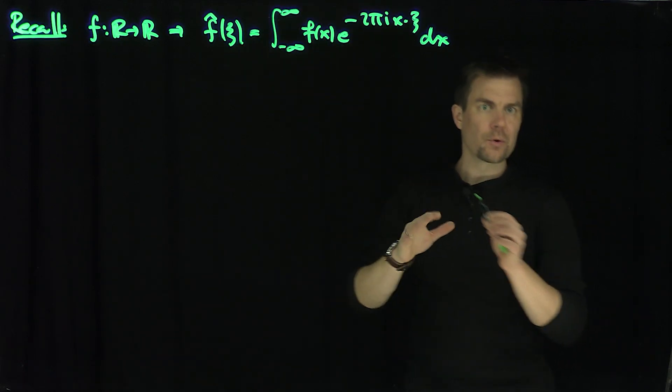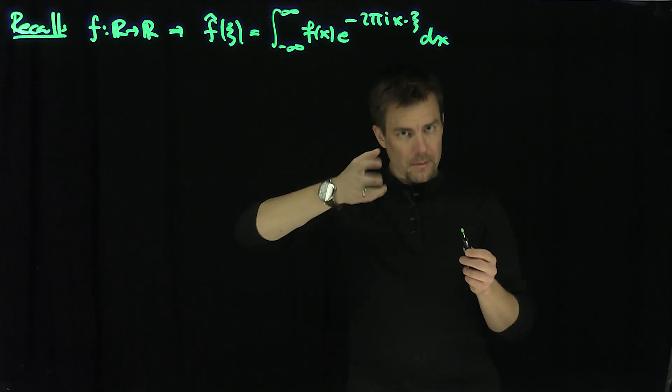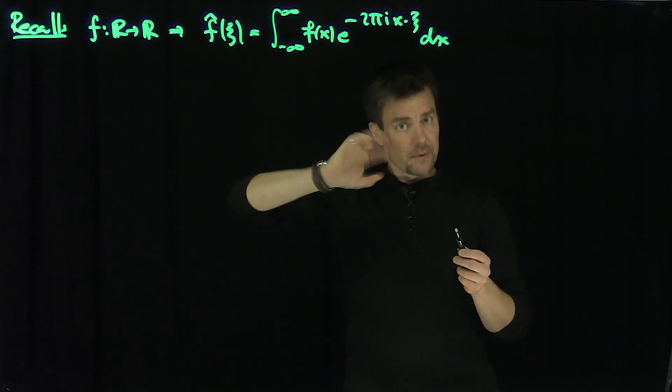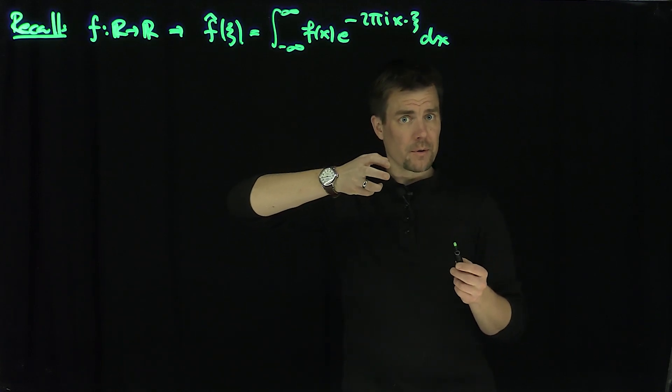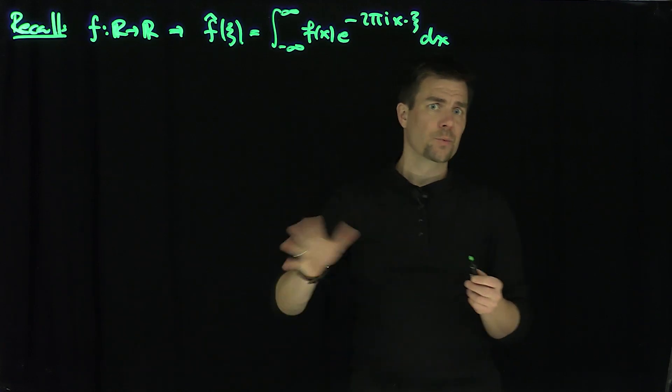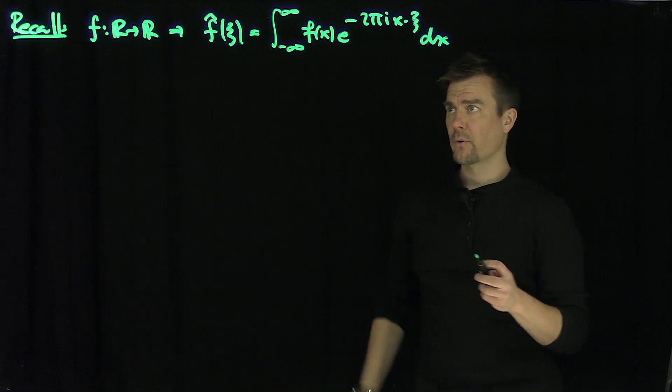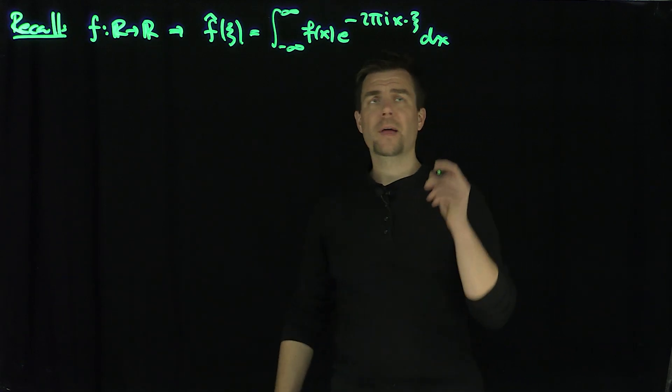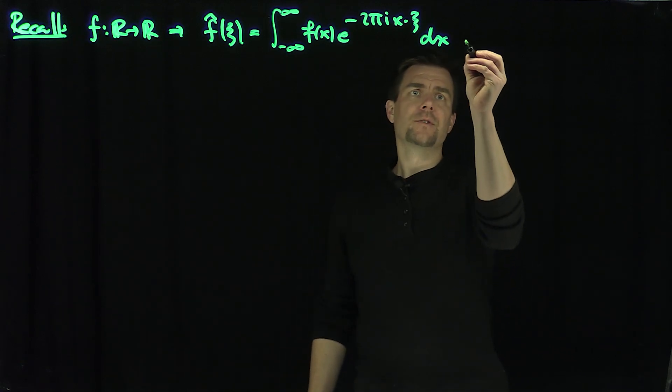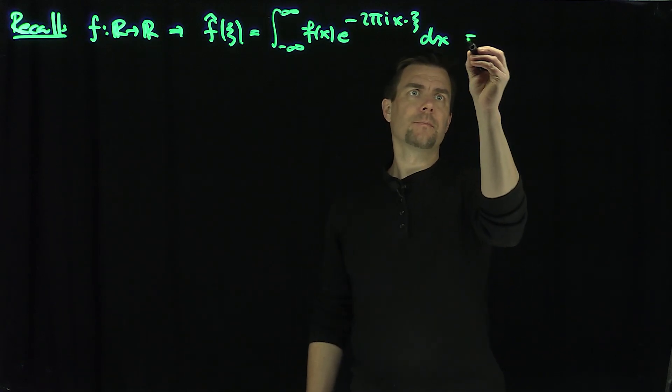So up to the circumference of the unit circle, this is one of the standard definitions of the Fourier transform.